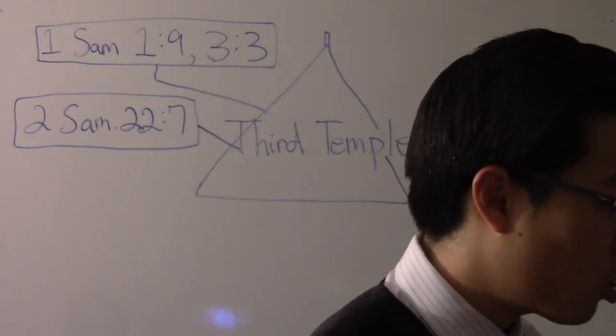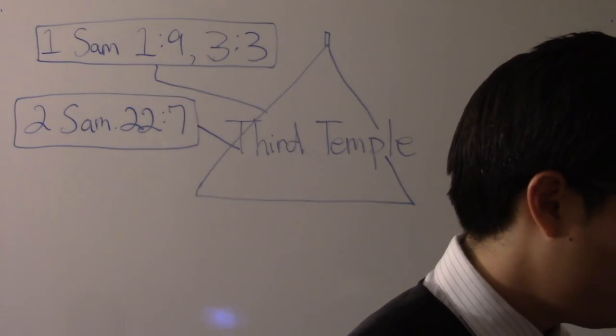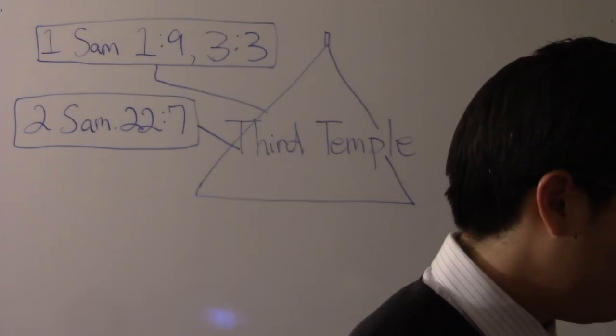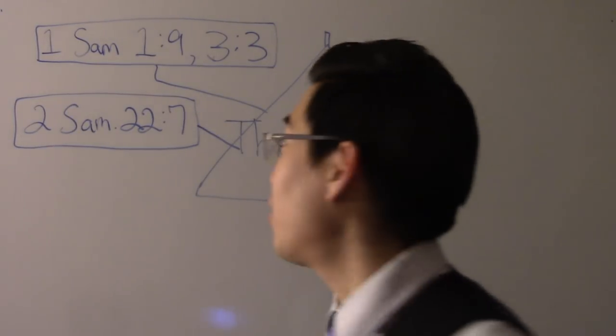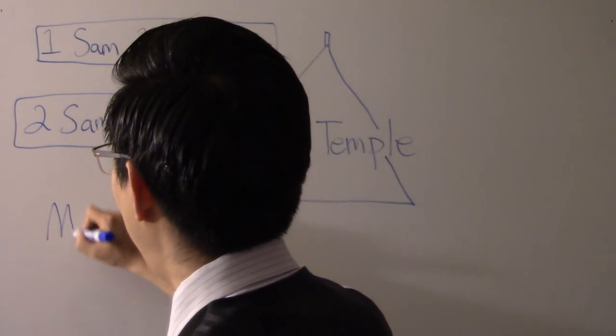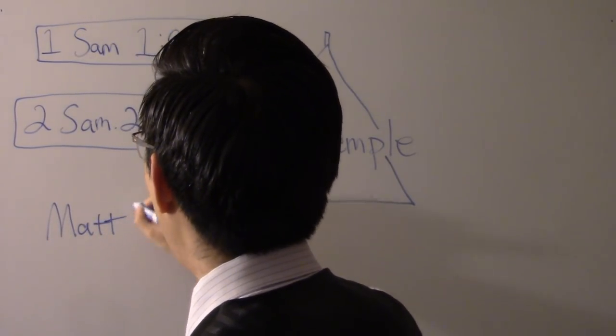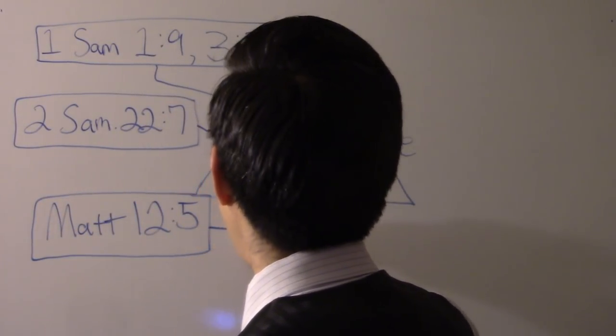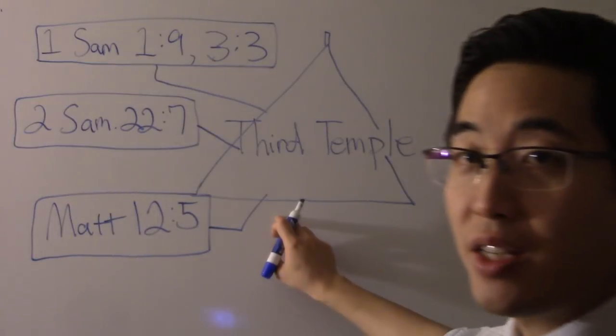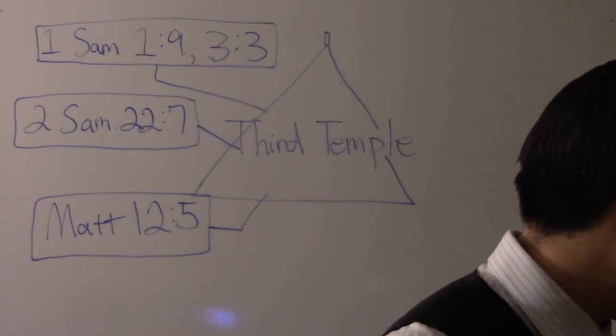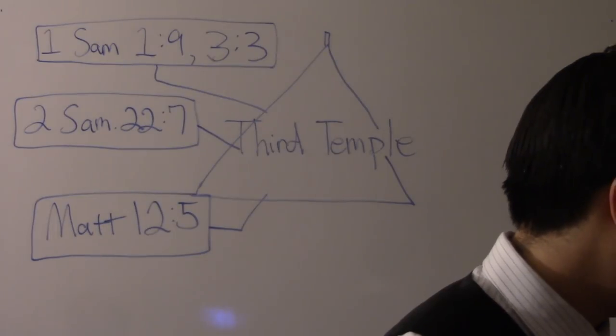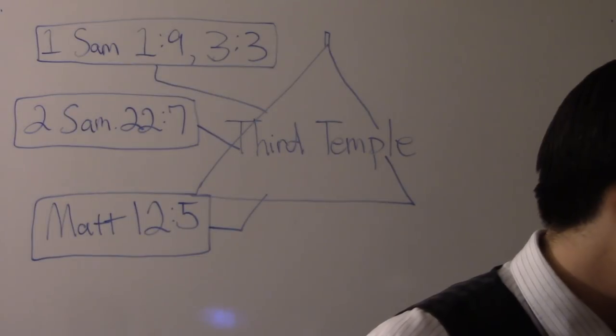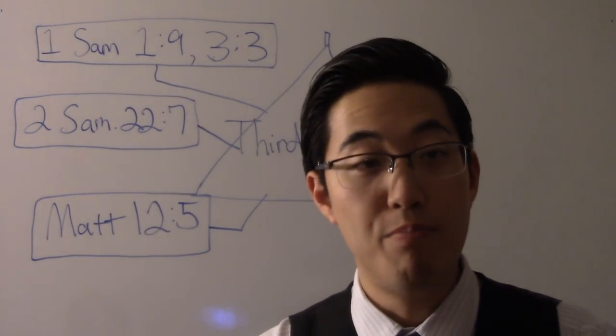Let's look at Matthew chapter 12. We're going to look at Matthew chapter 12 and verse 5. Even in the New Testament, right after they had the temple. This is when the Jews had their temple. But you're going to find out that in Matthew chapter 12 verse 5, Jesus even realized that the tent tabernacle was referred to as a temple. Matthew chapter 12, we will read verse 5. It says, or have you not read in the law? In the law, the law was written by Moses.